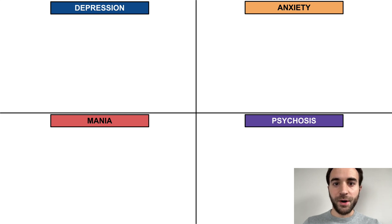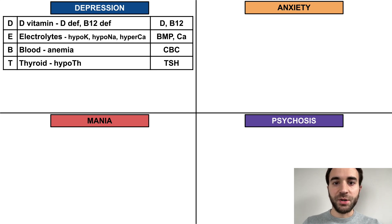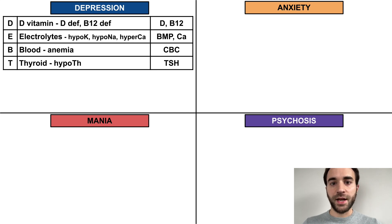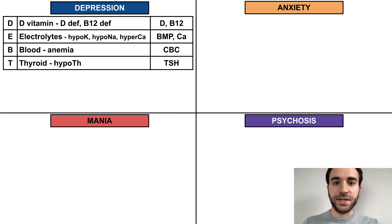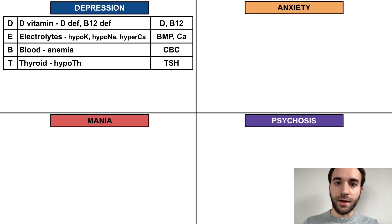Let's start with depression. The common causes of depression you should screen for can be remembered with the mnemonic DET. D-vitamin refers to both vitamin D and vitamin B12 deficiencies, and can be screened for by measuring levels of these vitamins. Electrolytes refer to electrolyte abnormalities that can cause depression, including hypokalemia, hyponatremia, and hypercalcemia, which can be screened for with a basic metabolic panel and calcium level. Blood refers to anemia, screened for with a complete blood count, and thyroid refers to hypothyroidism, which can be screened for with a TSH level.